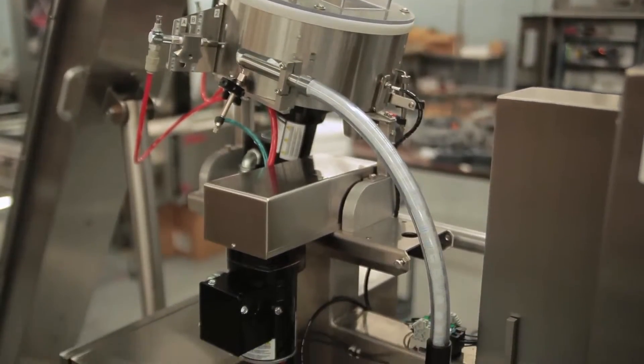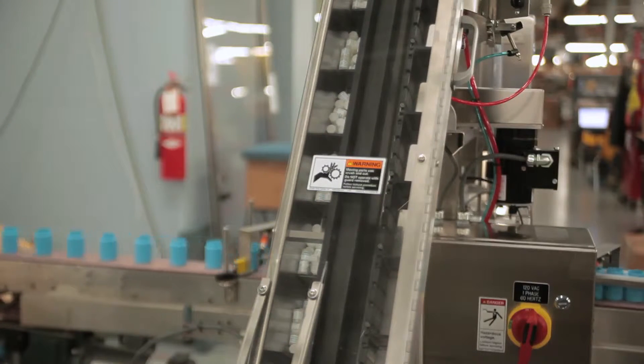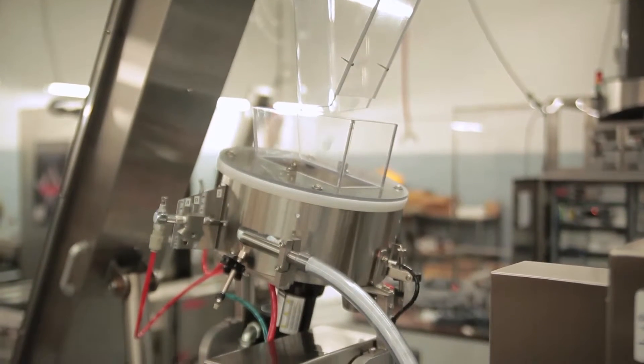When a sufficient number of canisters are detected, the hopper elevator is signaled to start and stop automatically to consistently maintain the right amount of canisters in the disc sorter.